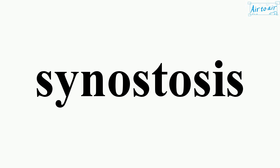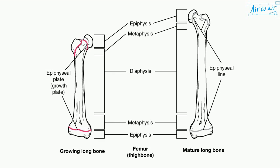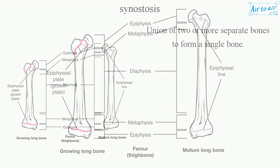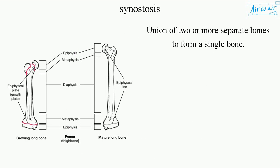Synostosis: the union of two or more separate bones to form a single bone.